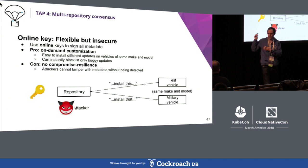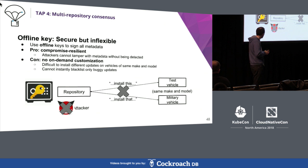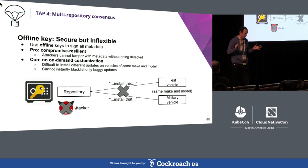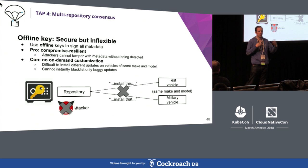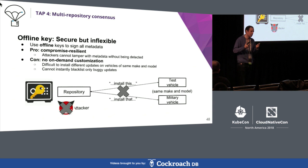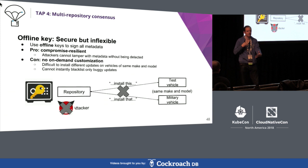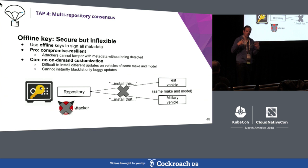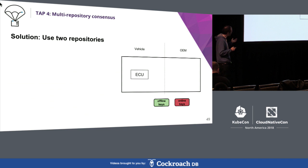Offline keys are better, but then you can't be responsive when a car asks what packages to install. There's also a surprising amount of customization — different software for different cars, service models, and use cases, including government vehicles getting different software for the same ECUs. Even big rental car companies have their own way of doing things. So the idea behind TAP 4 is to use two repositories.